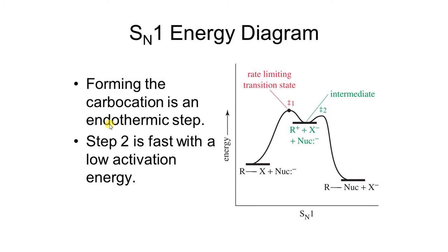Let's look at the SN1 energy diagram. Since SN1 occurs in two steps, we will see two transition states. Transition state one and transition state two, with an intermediate in between.